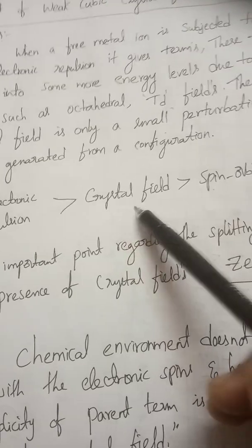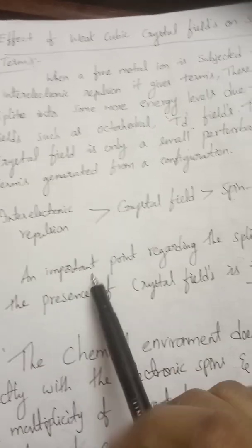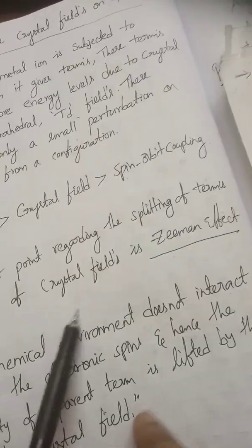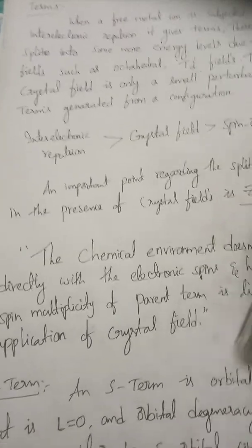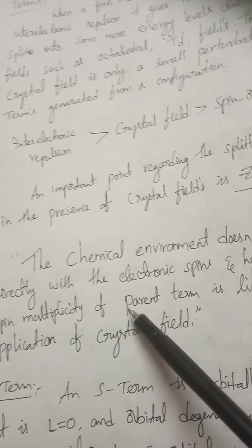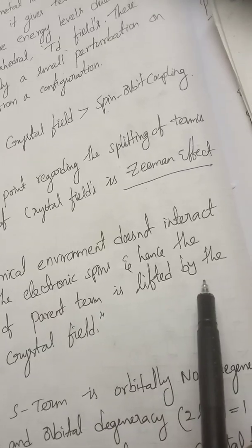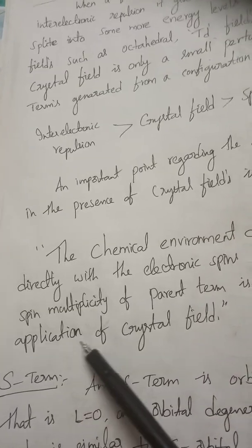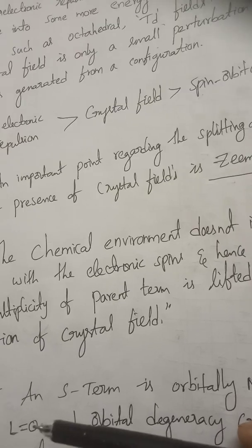This crystal field is more compared with the spin-orbit coupling. The important concept regarding the splitting of terms in the crystal field is called the crystal field weak field effect. The overall definition is: the chemical environment does not interact directly with the electron spins, and hence the spin multiplicity of the parent term is preserved by the application of crystal field. In the last class, I discussed the Racah parameters and spin-orbit coupling parameters.